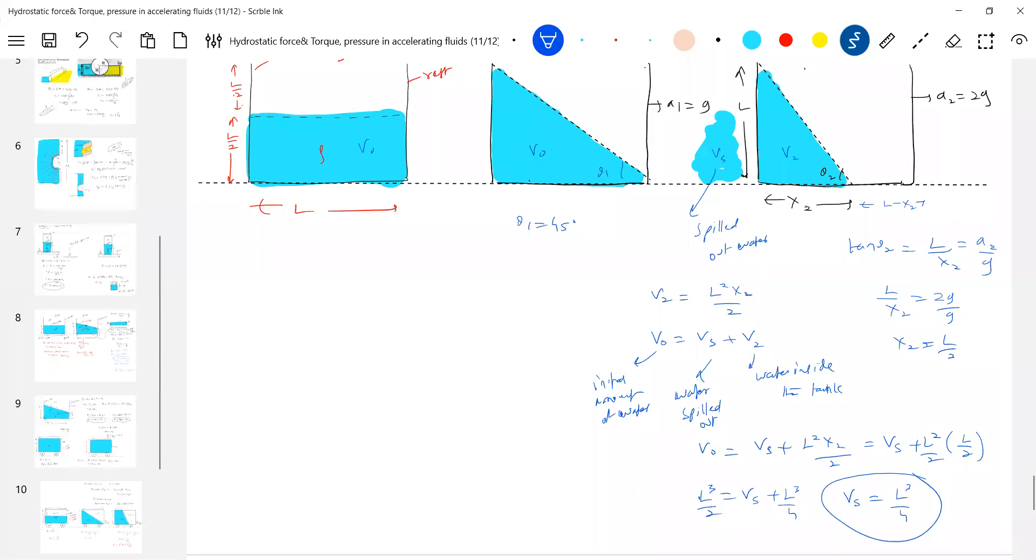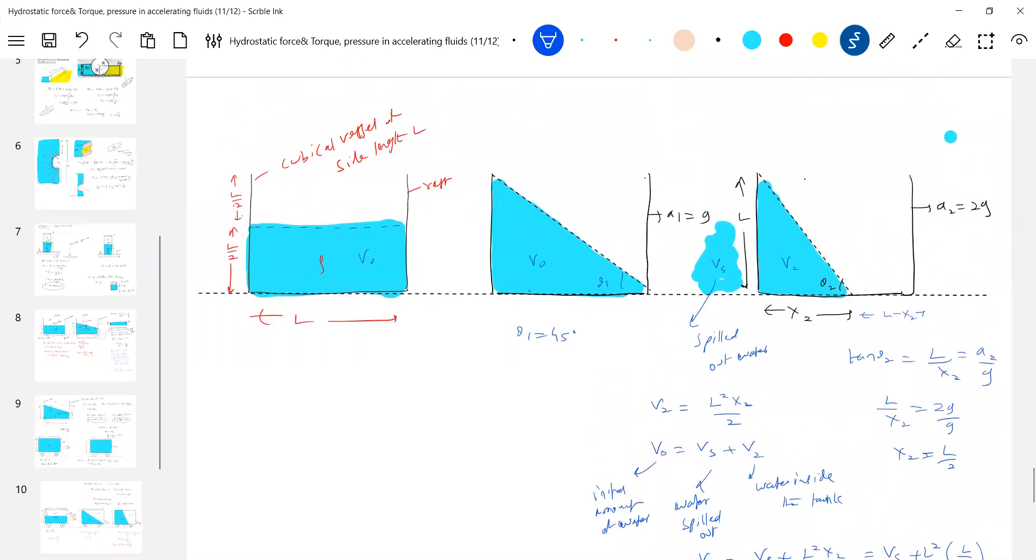So instead of a2 or 11, I may make it 3g by 2. Then in that way you can calculate. So like this we can calculate the spilled out volume. If I give spilled out volume, what are you going to do?